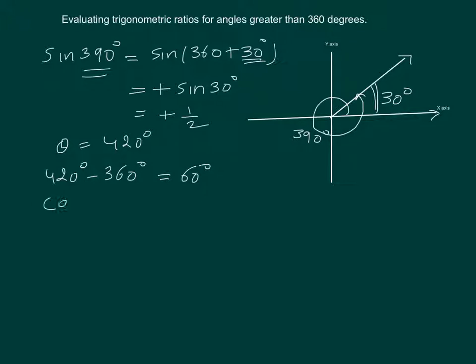Now if we have to find cos of 420 degrees, that will be same as writing cos of 360 plus 60 degrees. And again 360 is on the x-axis, so x-axis is the line of reference and this will be equal to cos of 60 degrees, positive sign because all ratios are positive in the first quadrant.